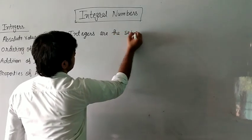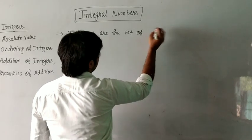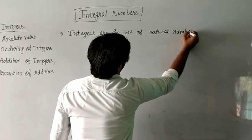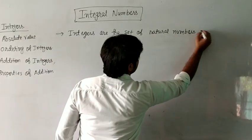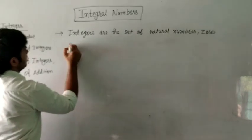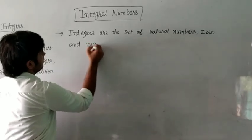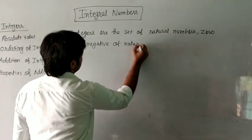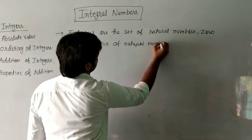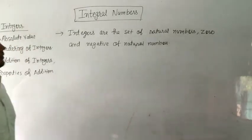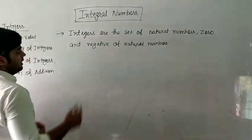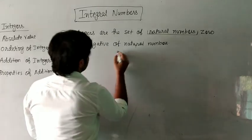Integers are the set of natural numbers, zero, and negative natural numbers. So integers include natural numbers, zero, and the negatives of natural numbers.